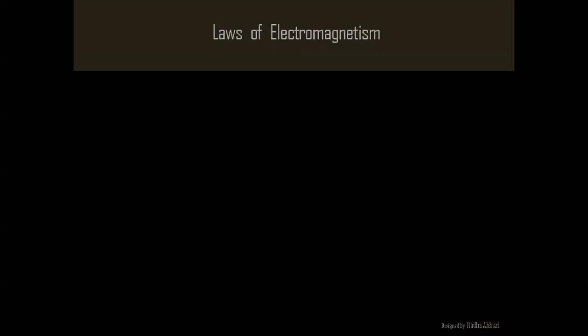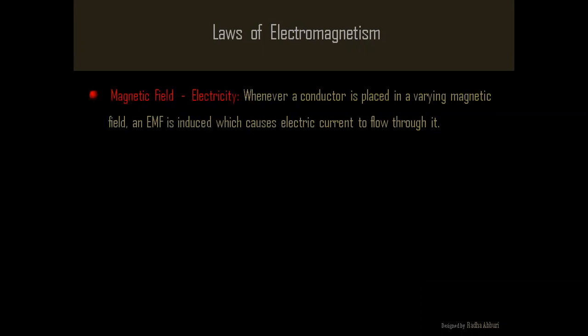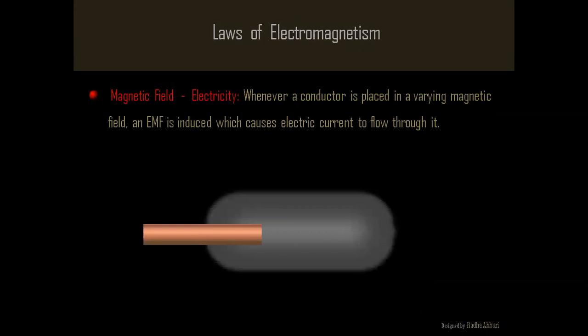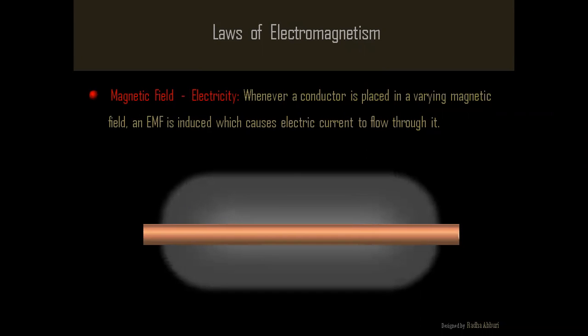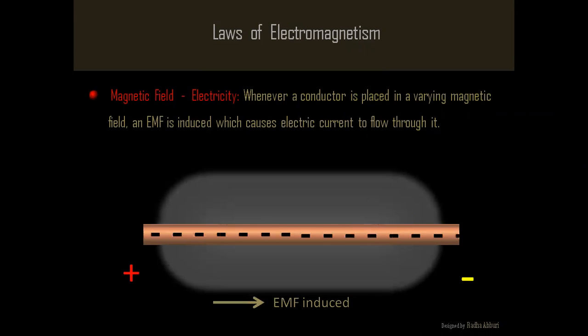The second law states that whenever a conductor is placed in a varying magnetic field, an EMF is induced which causes electric current to flow through it. So, we have seen that the working of an inductor is governed by these two laws.